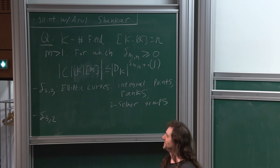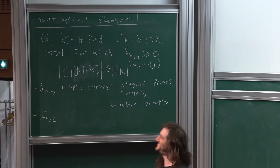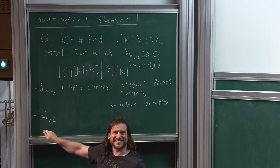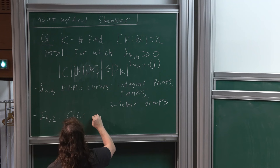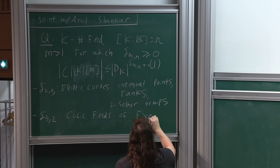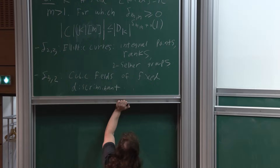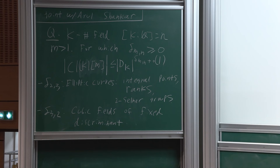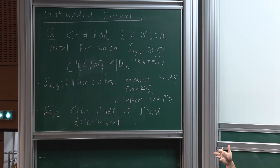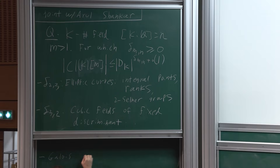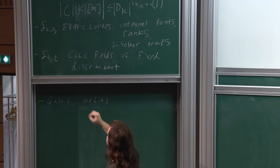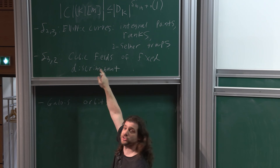Another example: if you look at δ_{3,2}, i.e., 3-torsion in quadratic fields, this is related to the question of cubic fields of a given discriminant. If you're looking to count cubic fields, not just up to a given discriminant but with slightly more refined asymptotics, you find yourself interested in this quantity δ_{3,2}. If you look at 3-torsion in quadratic fields, this turns out to be the key quantity in understanding cubic fields of a fixed discriminant.